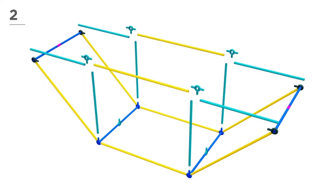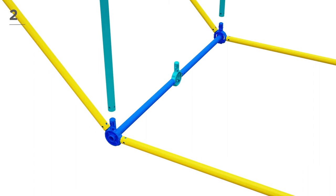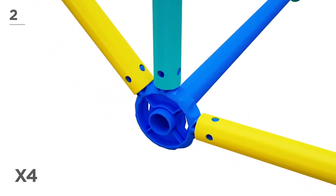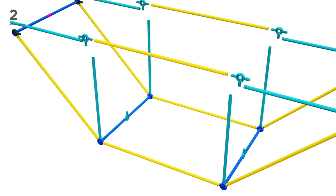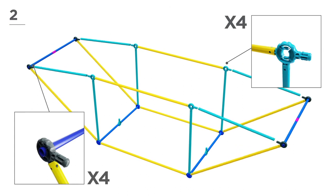Now, using 8 blue poles, 2 yellow poles, and 4 blue connectors, begin to build the sides. Fit each part together one at a time, like this.